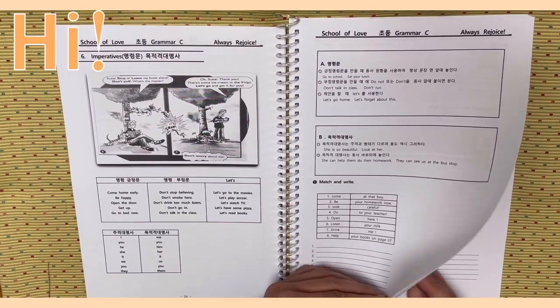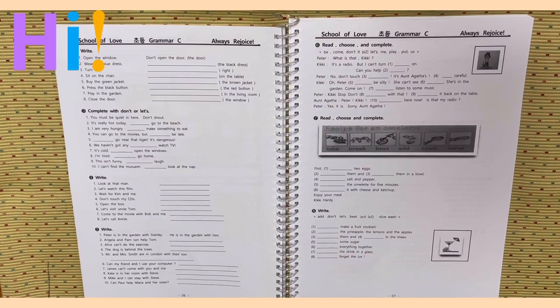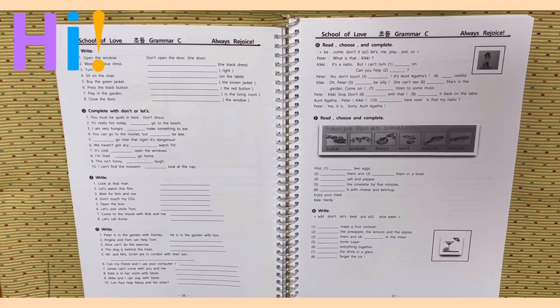Page 26. Activity 2. Write. Number 1. Open the window. Don't open the door. 자, 부정문으로 다 바꿔줌 됩니다.